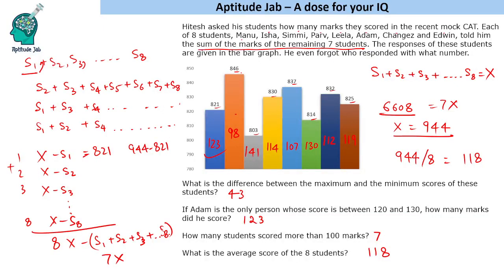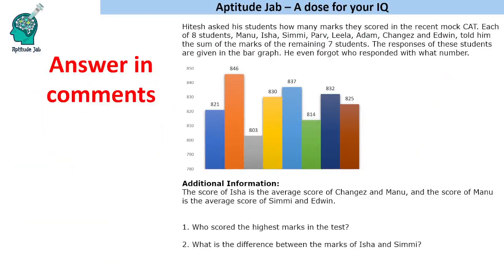Here is a challenge question for you to answer in the comments. Additional information: the score of Isha is the average score of Changez and Manu, and the score of Manu is the average score of Simi and Adwin. Using this, answer two questions: who scored the highest marks in the test, and what is the difference between the marks of Isha and Simi? If you cannot determine the answers, comment 'cannot be determined.'